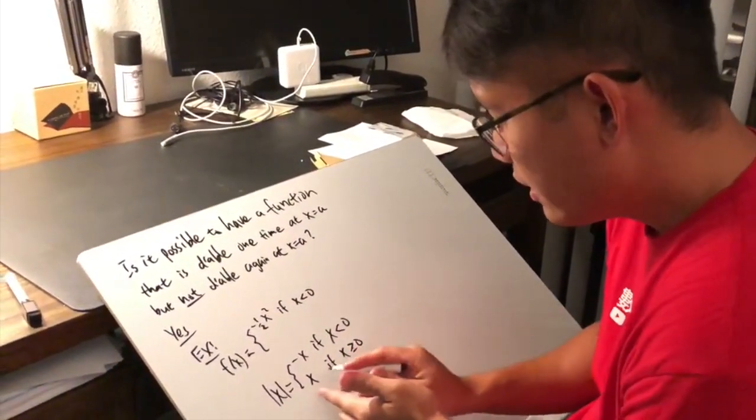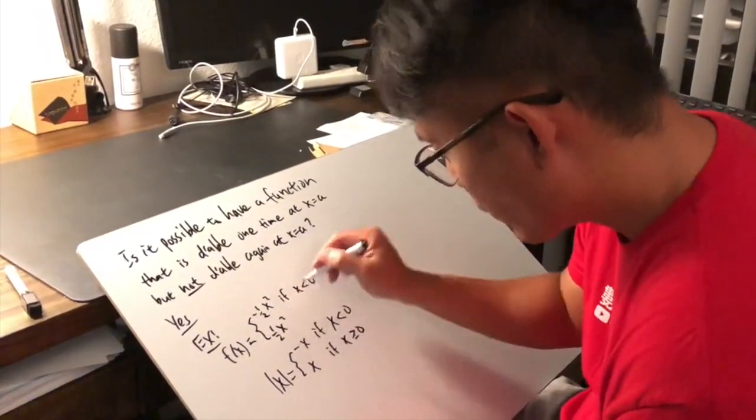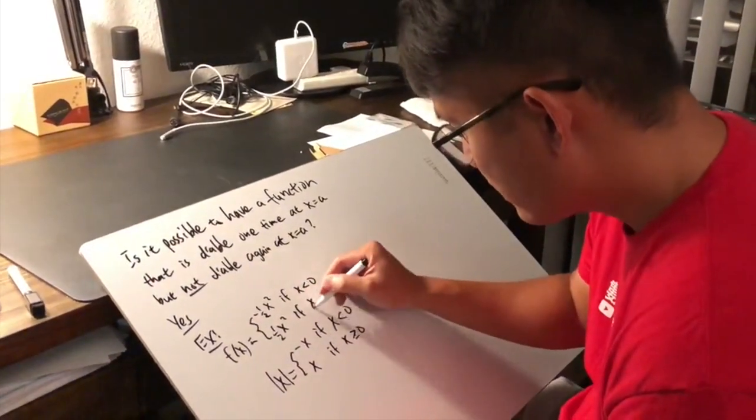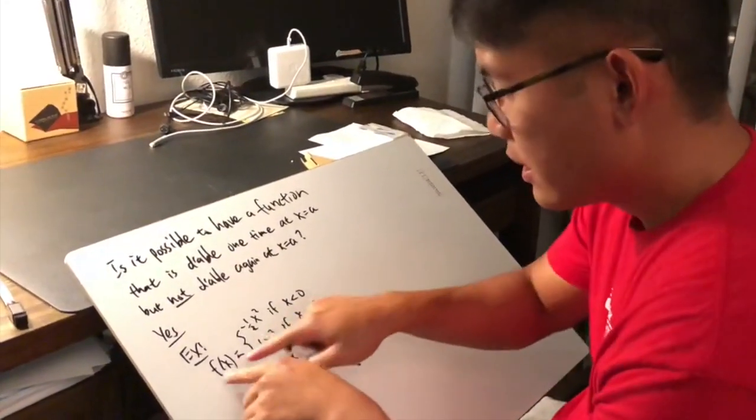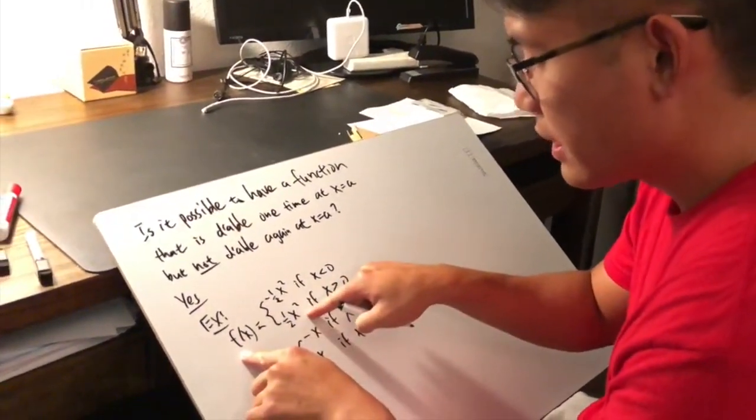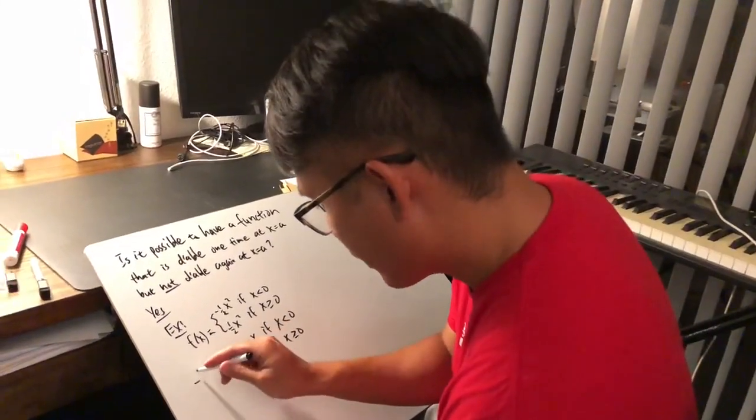And this is if x less than 0. And similarly, right here, I will just put down 1 half x squared, if x is greater than or equal to 0. And now, check this out. The derivative of this function is precisely the absolute value of x.